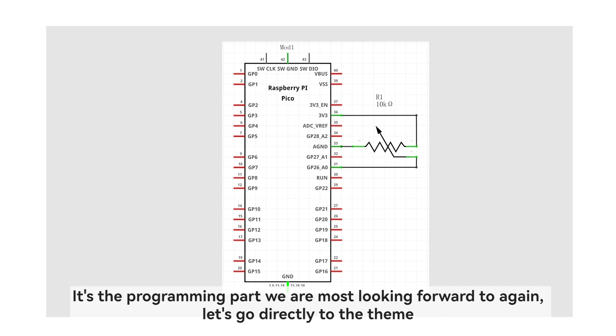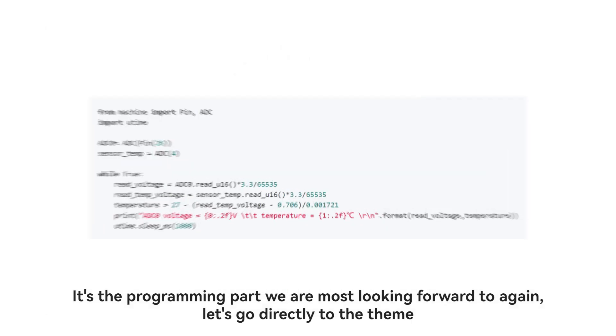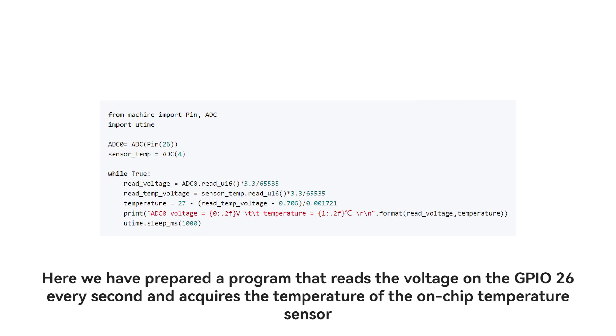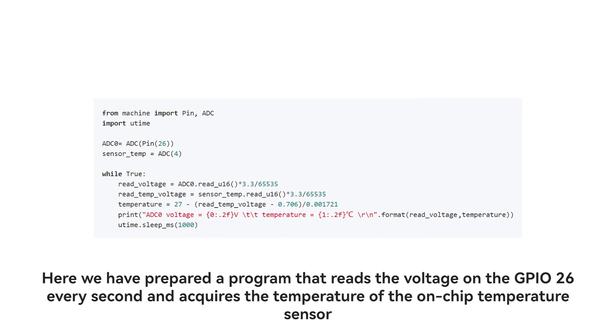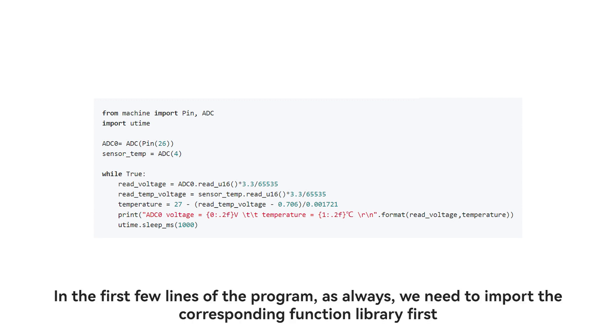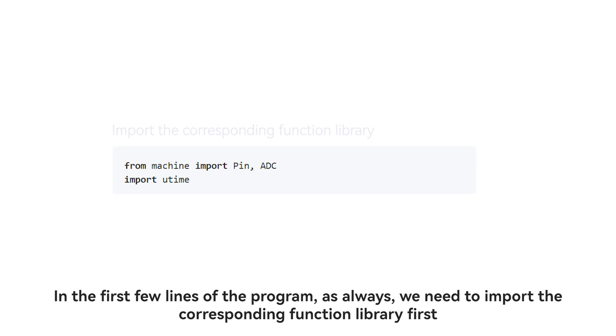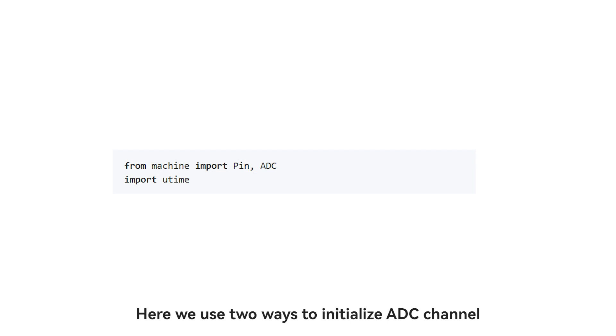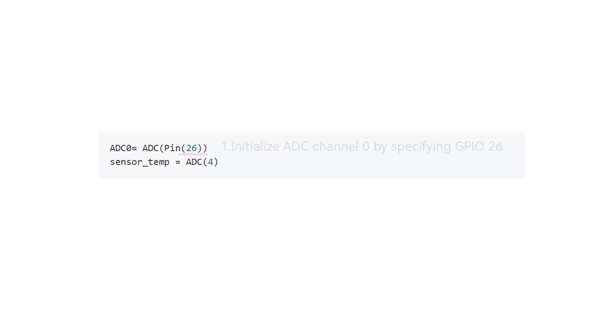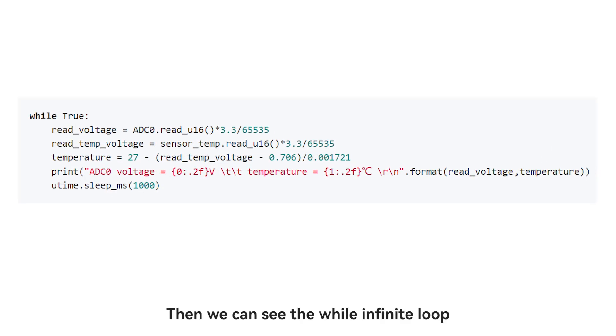It's the programming part we are most looking forward to again, let's go directly to the theme. Here we have prepared a program that reads the voltage on the GPIO 26 every second, and acquires the temperature of the on-chip temperature sensor. In the first few lines of the program, as always, we need to import the corresponding function library first. Here we use two ways to initialize ADC: 1. initialize ADC channel 0 by specifying GPIO 26. 2. initialize ADC channel 4, which corresponds to the on-chip temperature sensor.